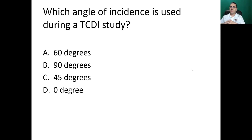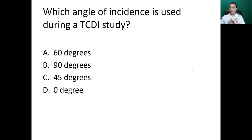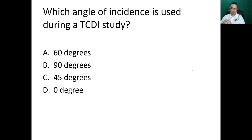Next question: which angle of incidence is used during a TCDI study? Options: 60 degrees, 90 degrees, 45 degrees, or zero degrees. The answer is zero degrees — parallel to the flow. For the carotid system we use 60-degree angulation.